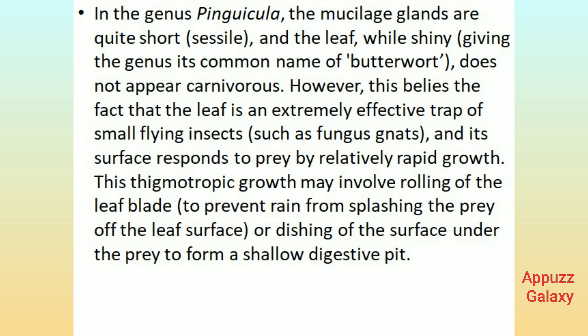In the genus Pinguicula, the mucilage glands are quite short, sessile, and the leaf, while shiny — giving the genus its common name of butterwort — does not appear carnivorous. However, this belies the fact that the leaf is an extremely effective trap of small flying insects, such as fungus gnats, and its surface responds to prey by relatively rapid growth. This thigmotropic growth may involve rolling of the leaf blade to prevent rain from splashing the prey off the leaf surface, or dishing of the surface under the prey to form a shallow digestive pit.